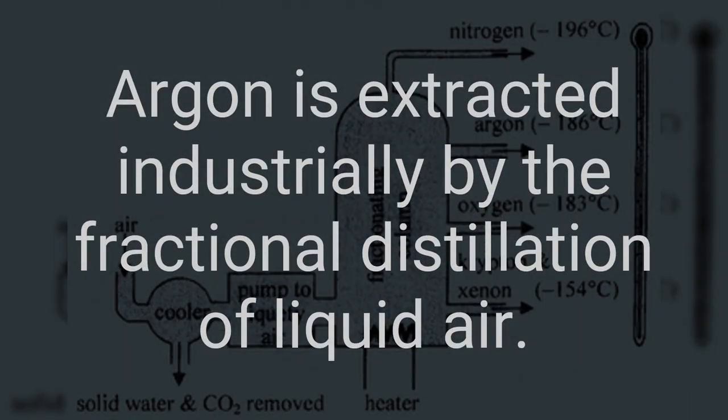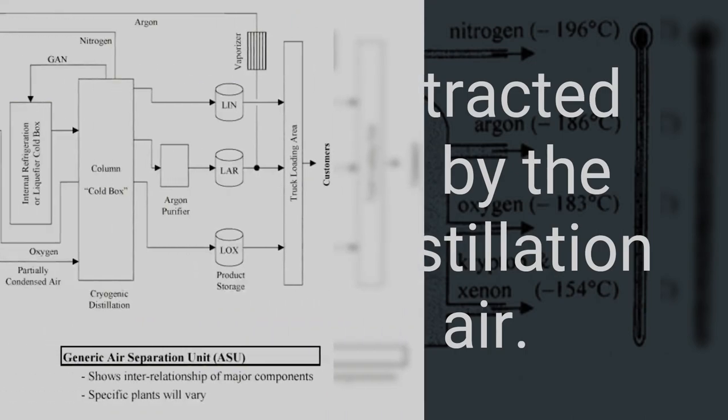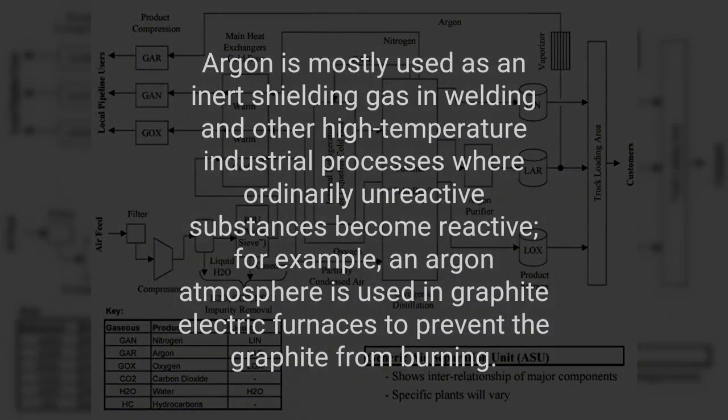Argon is extracted industrially by the fractional distillation of liquid air. Argon is mostly used as an inert shielding gas in welding and other high-temperature industrial processes where ordinarily unreactive substances become reactive. For example, an argon atmosphere is used in graphite electric furnaces to prevent the graphite from burning.